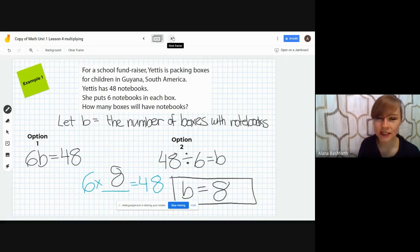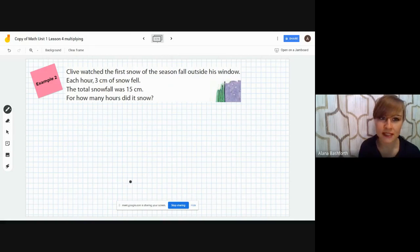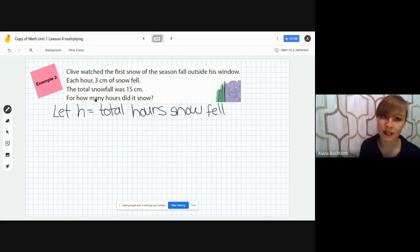The next question is, Clive watched the first snow of the season fall outside his window. Each hour, 3 centimeters of snow fell. The total snowfall was 15 centimeters. For how many hours did it snow? The first thing we need to do is assign a letter to the unknown, and the unknown is how many hours in total did it snow for. I chose H for hours, so that H equals total hours fell.